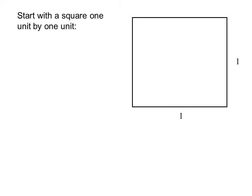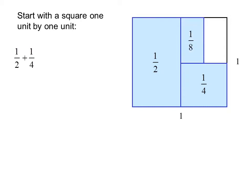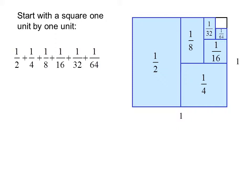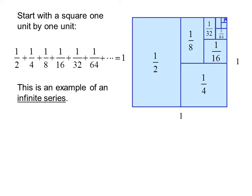Start with a square one unit by one unit. We section off half the square, so we have an area of one half. We take half the remaining area, which has an area of one fourth. And we keep adding. The next section has an area of one eighth, then one sixteenth, one thirty-second, one sixty-fourth. And if we keep going like this forever, we will have filled in the entire square and we will have an area of one. This is an example of an infinite series.